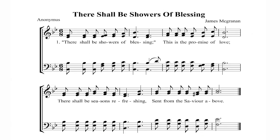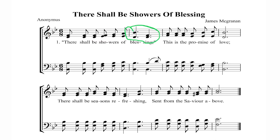In the second example, 8 as the lower number indicates that the eighth note is one beat, and the 6 on top means there must be 6 eighth notes or quavers in a bar or measure, in whatever combination. As you can observe, there are 6 eighth notes in the first bar, 6 eighth notes in the second in the form of 2 dotted quarter notes, 6 eighth notes in the third bar, and 6 eighth notes in the fourth in the form of a dotted minim, which equals 6 quavers.